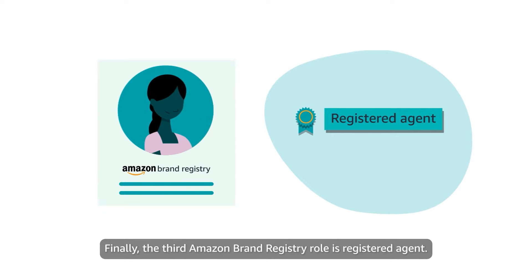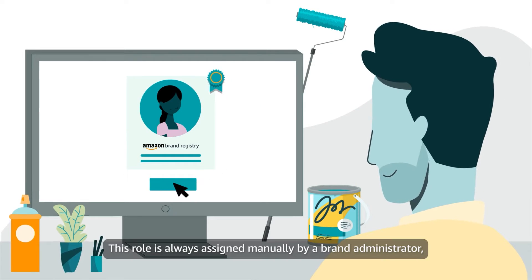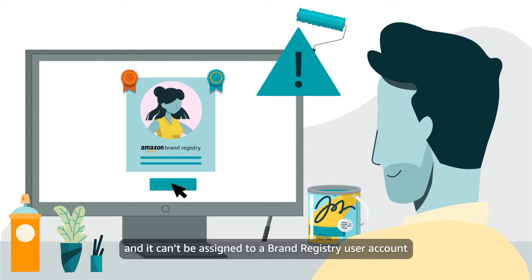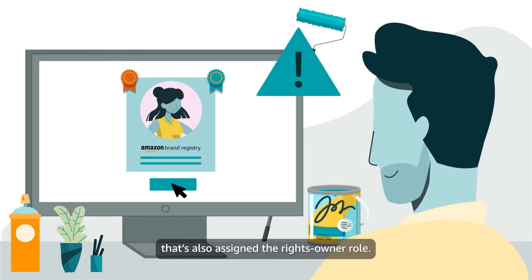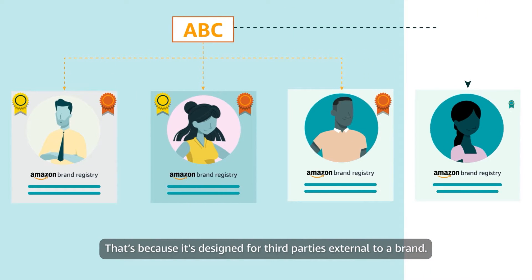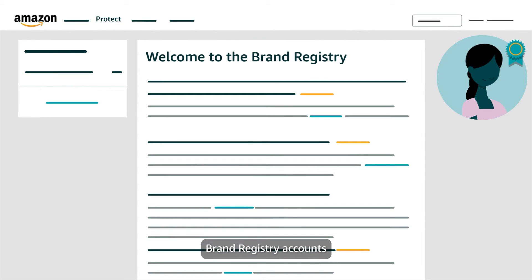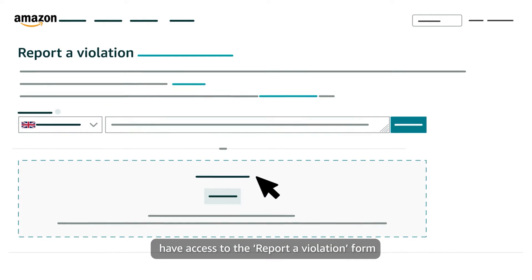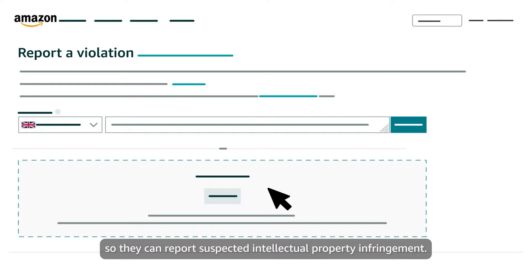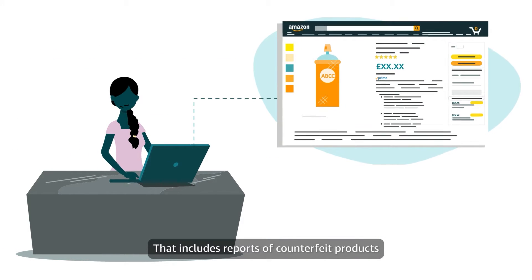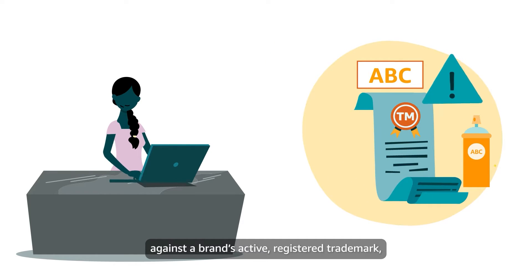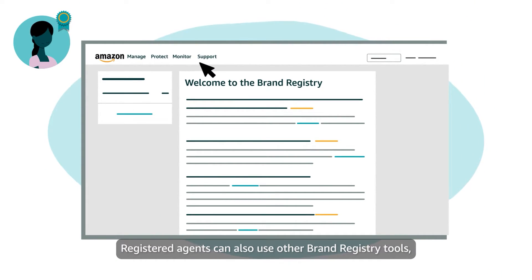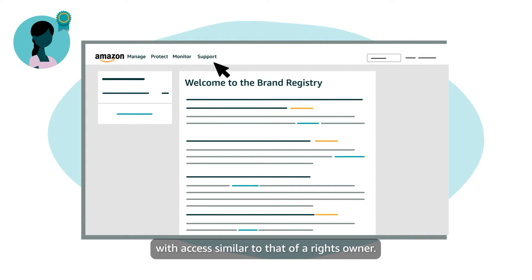Finally, the third Amazon Brand Registry role is Registered Agent. This role is always assigned manually by a Brand Administrator and it can't be assigned to a Brand Registry user account that's also assigned the Rights Owner role. That's because it's designed for third parties external to a brand. Brand Registry accounts assigned the Registered Agent role have access to the Report a Violation form so they can report suspected intellectual property infringement — including counterfeit products against a brand's active Registered Trademark as well as other types of IP violations. Registered Agents can also use other Brand Registry tools, with access similar to that of a Rights Owner.